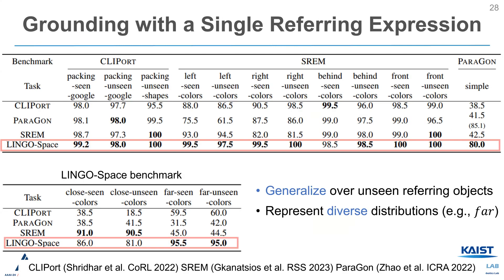We evaluate the performance of LingoSpace with our own benchmark and three distinct benchmarks. The results presented in the tables show that LingoSpace exhibits generalizability over unseen referring objects and effectively represents diverse distribution, such as FAR.